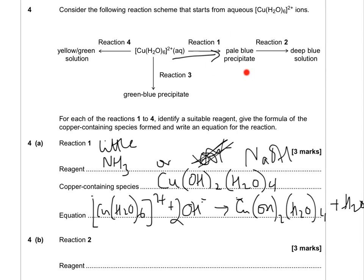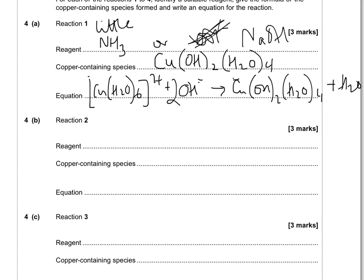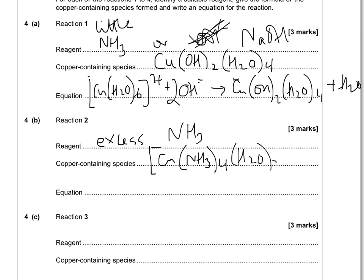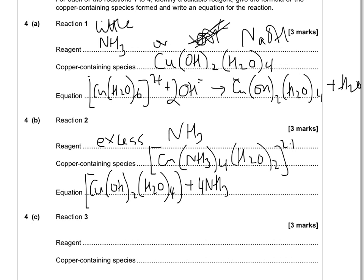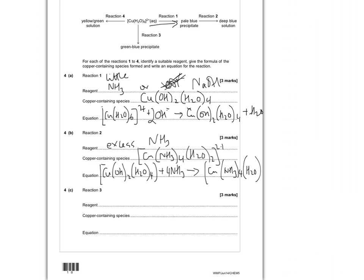Reagent 2: adding excess NH₃ to the pale blue precipitate to form a deep blue solution. The reagent is excess NH₃. The copper-containing species is [Cu(NH₃)₄(H₂O)₂]²⁺ — this is one of the exceptions you have to learn. The equation starts with the copper hydroxide (no charge), plus 4NH₃, which kick out to give [Cu(NH₃)₄(H₂O)₂]²⁺ plus 2OH⁻ and 2H₂O.